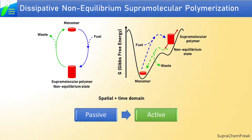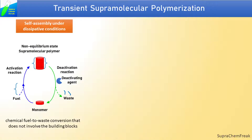The field of transient supramolecular polymerization deals with control over the rate of formation, decay, and lifetime of the transient state. Based on the system, there can be different kinds of dissipative self-assembly. Let's discuss the three.